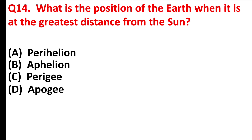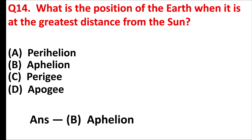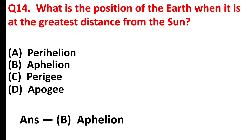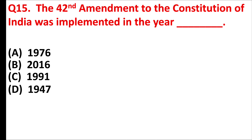What is the position of the earth when it is at the greatest distance from the sun? Answer is option B: aphelion. The 42nd Amendment to the Constitution of India was implemented in the year — answer is option A: 1976.